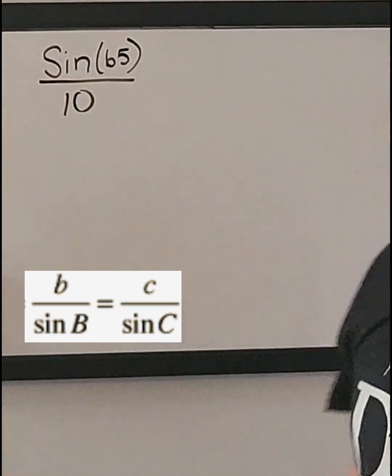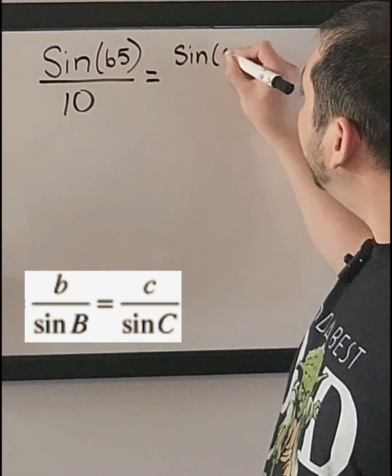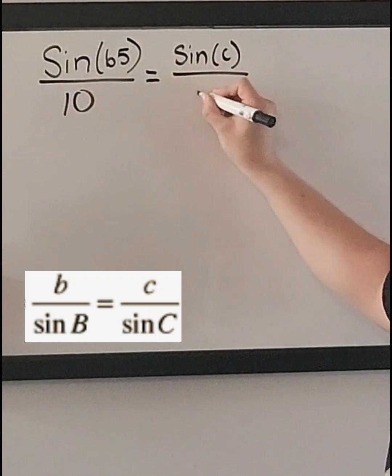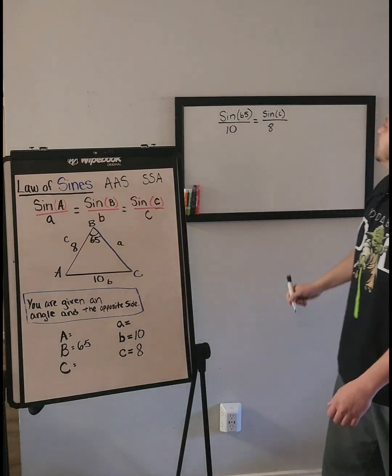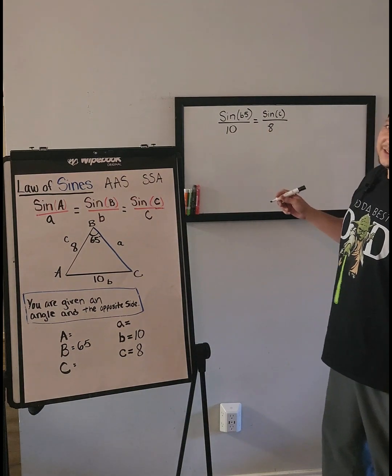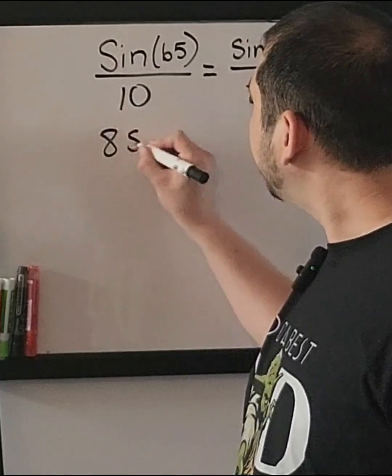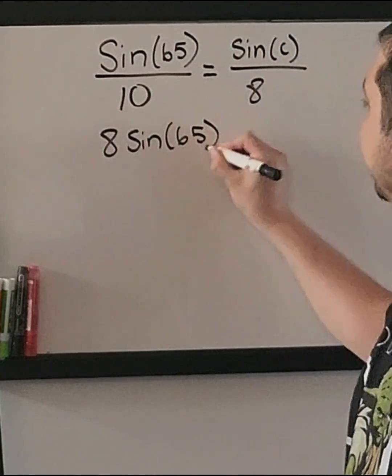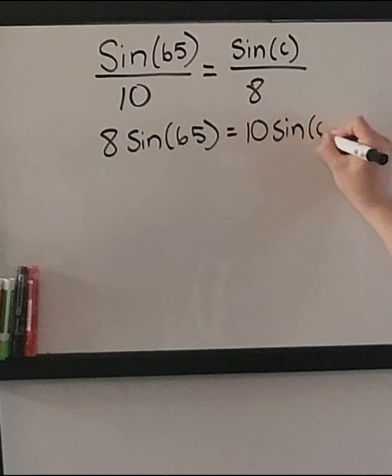This equals the sine of C, which is unknown, over the length C, which is opposite C. We're going to cross multiply to solve this proportion. So you're going to get 8 times the sine of 65 equals 10 times the sine of C.